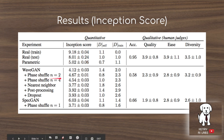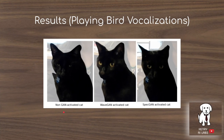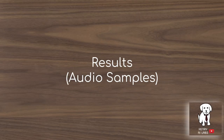Results using the inception score show that the phase shuffle technique significantly improves performance compared to not using it. There's also an interesting results visualization showing a cat's response to bird vocalizations synthesized by the model.